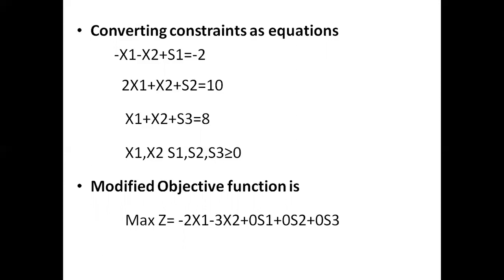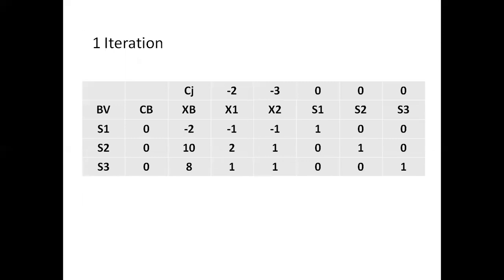Using this information from the constraints and objective function, we construct the simplex table. In the first iteration, the table contains basic variables S1, S2, S3 with coefficients CB all equal to 0, and the XB values as the right-hand side values of the constraints, along with columns for x1, x2, s1, s2, s3. The CJ values are the coefficients of the decision variables placed in the simplex table.